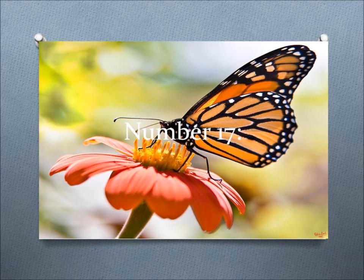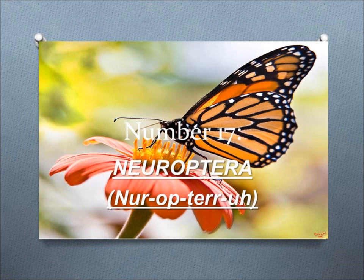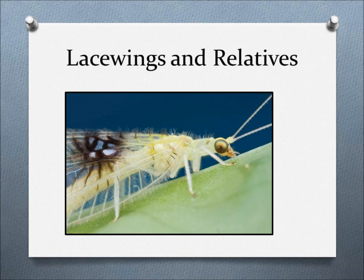Number 17, Neuroptera. This order includes lacewings and their relatives, which are medium-sized to large, have soft bodies and four delicate membranous wings as adults, while the larvae have large mandibles that are greatly modified for piercing and sucking their prey.